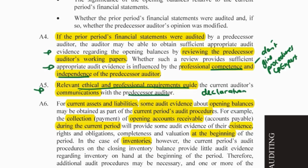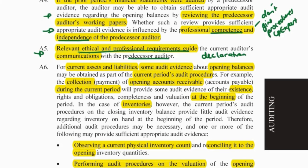If we can't rely on the previous auditors or there were none, for current assets and liabilities — accounts receivables and accounts payables — we can perform subsequent collection or payment procedures to obtain evidence over existence, rights and obligations, completeness, and valuation at the beginning of the year. This also applies to loans, which may be either a receivable or a payable; any subsequent payment or receipt helps us get evidence over that opening balance, which is the prior year closing balance.